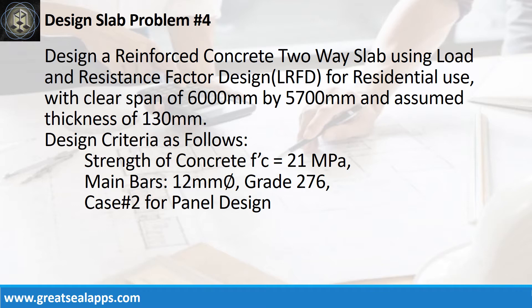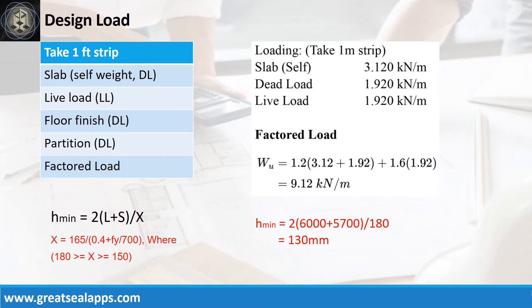Strength of concrete: 21 MPa. Main bars: 12 mm bar, grade 276. Case No. 2 for panel design. The uniform load for 130 mm thick slab is 3.12 kN/m. Residential live load is 1.92 kN/m. Other dead load, like floor finish and partition, is 1.92 kN/m, for a factored load of 9.12 kN/m.